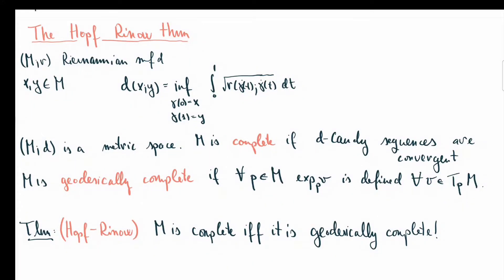Today I'm going to talk about the Hopf-Rinow theorem, which is a result that relates the topology of a manifold to its geometry. To start off, let us fix a Riemannian manifold. Recall that there's a so-called Riemannian distance that you can define between two points x and y, which is the infimum of the lengths of all piecewise smooth curves joining x and y. Such a d gives you a metric space structure on your manifold.